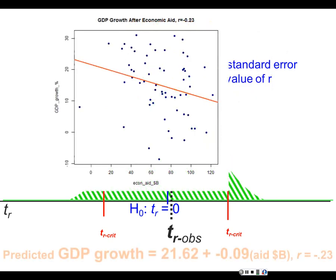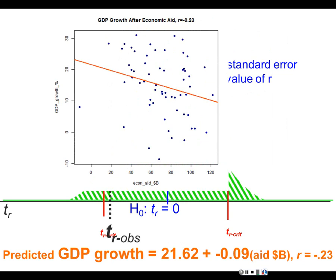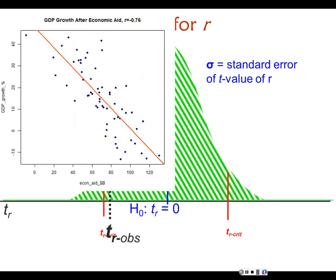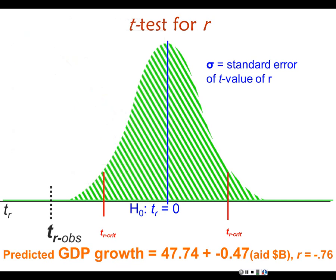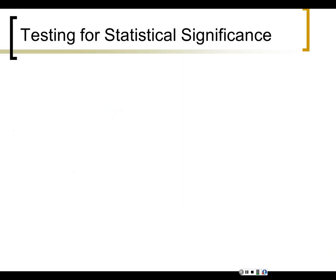Consider a correlation of negative 0.23 — we wouldn't quite reject the null hypothesis. But with a strong correlation like negative 0.76, the line fits the dots very well, and we do reject the null hypothesis — the t-value might be around negative 4. So the strength of the correlation coefficient, which is also the strength of b just transformed, determines whether you have a significant result.